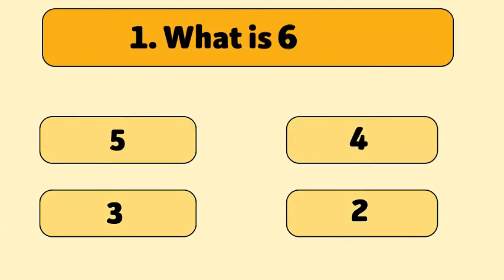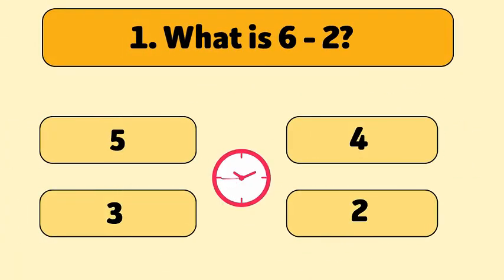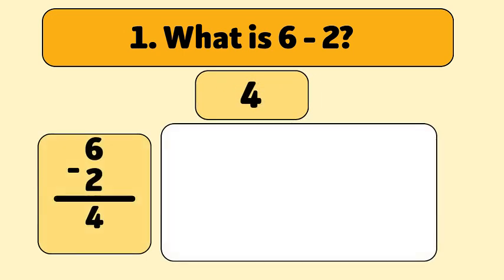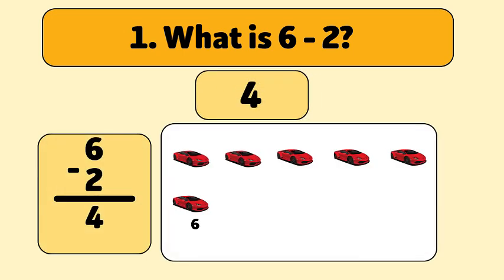What is 6 minus 2? The answer is 4! We start with 6 cars and take away 2. Let's count! 1, 2. Now we have 4 cars left!